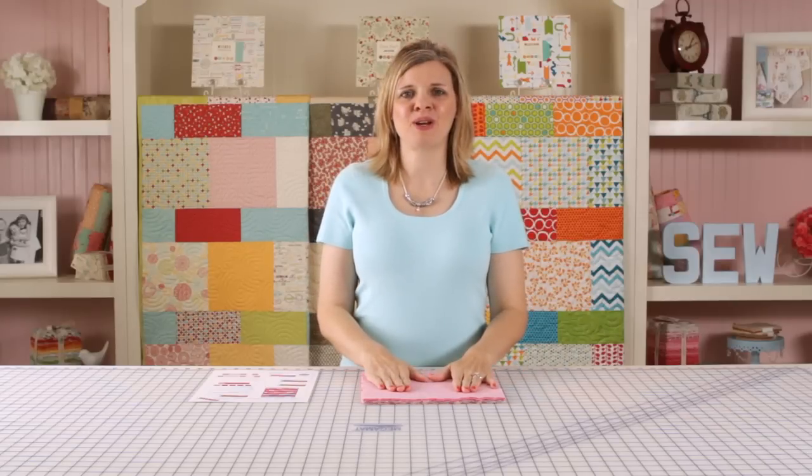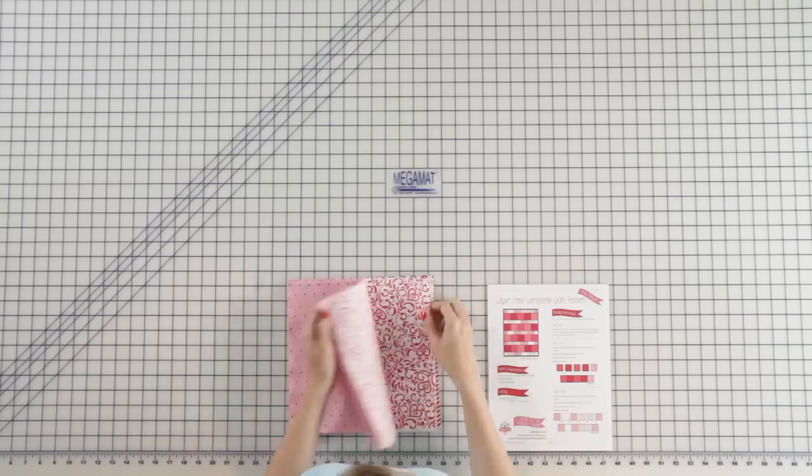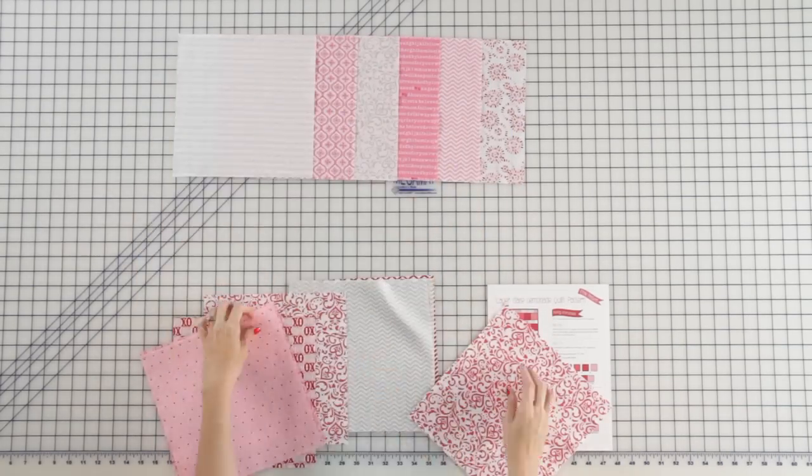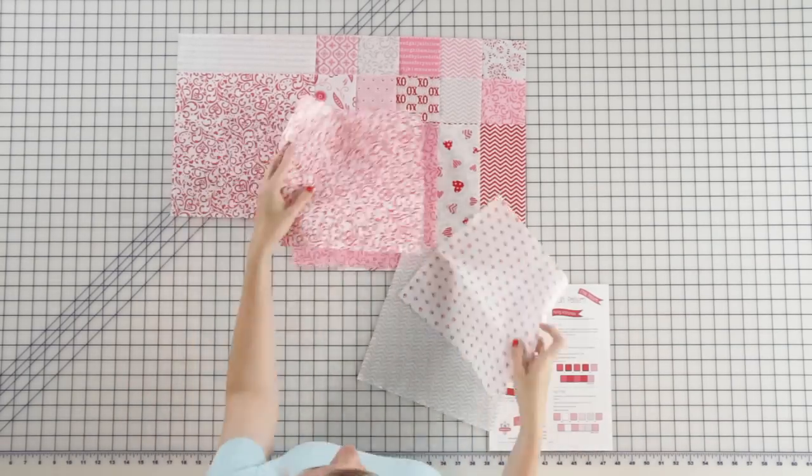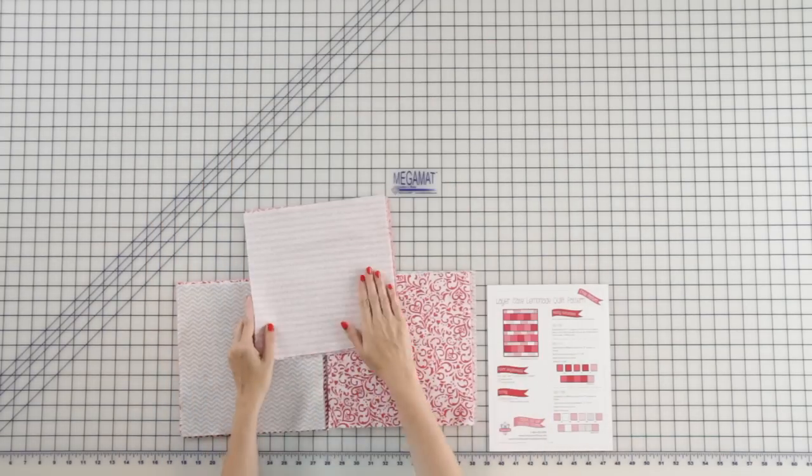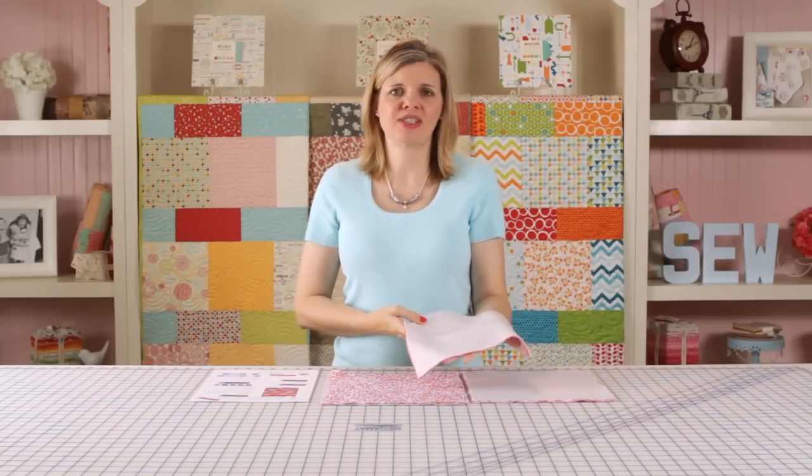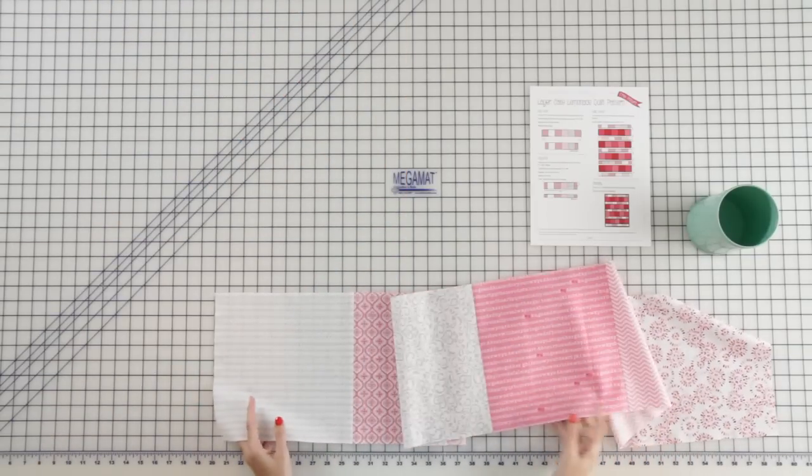We're going to make three rows and each row is going to have six light prints. Next thing you want to do is sew your rows together just like we did on our dark rows. Now you have assembled three light rows.